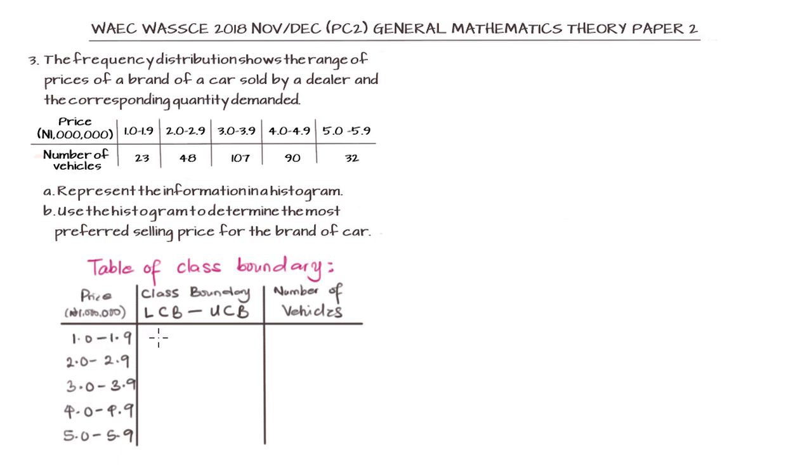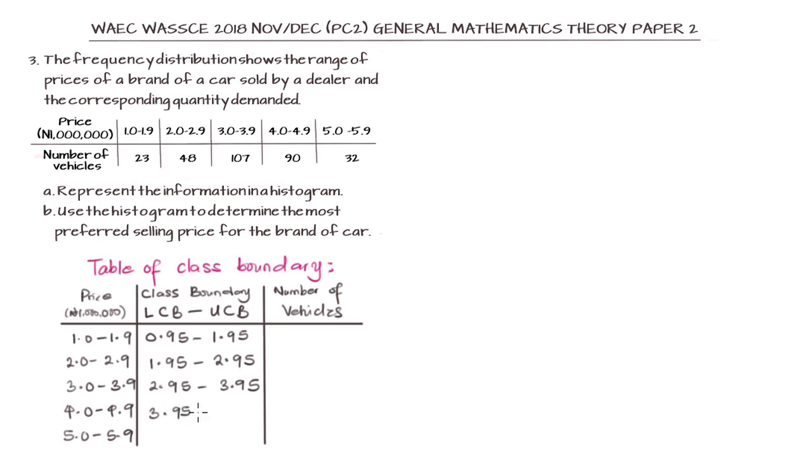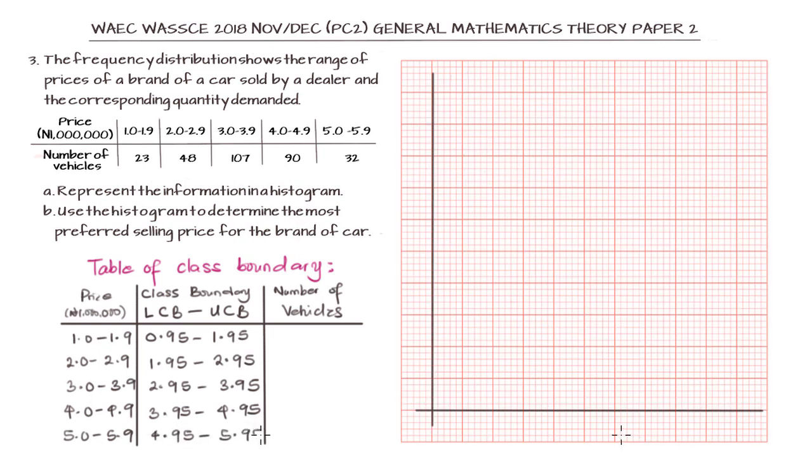The class boundary will be the value when we take 0.5 out of the first entry and add 0.5 to the last entry. So we are going to have 0.95 to 1.95, 1.95 to 2.95, then 2.95 to 3.95, 3.95 to 4.95, and then 4.95 to 5.95. Having this, we can put in the values of the number of vehicles.